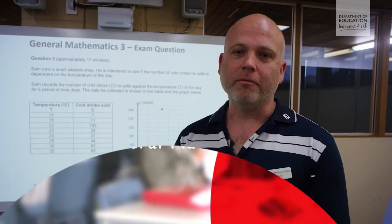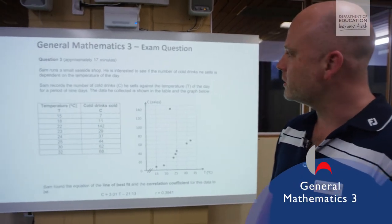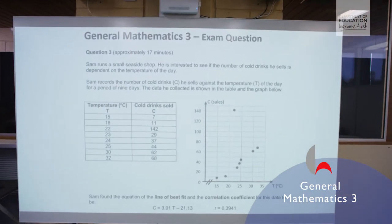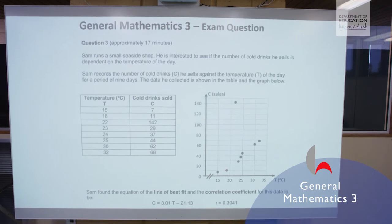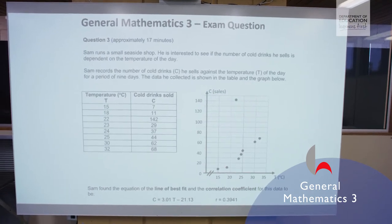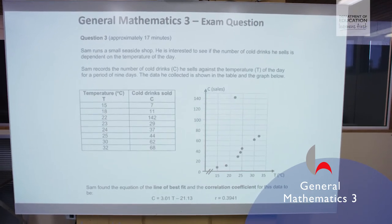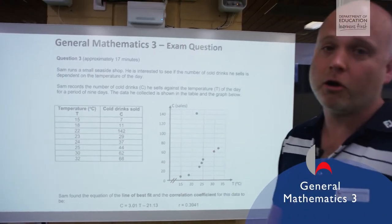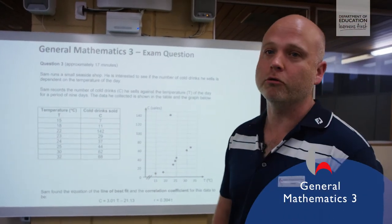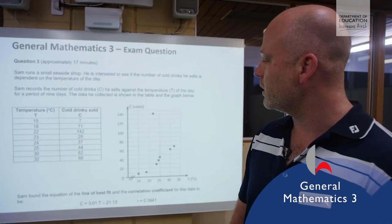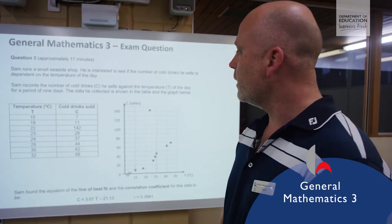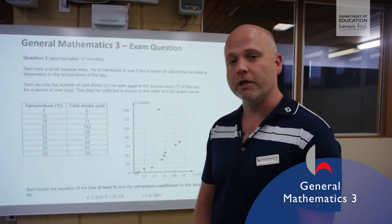So this is a problem from the General Maths 3 course. You can see that we're examining the relationship between the temperature and number of cold drinks sold. So we'd expect that if it's a hotter day we'd be selling more cold drinks and we're modelling this in three different ways. This is a really typical question from General Maths 3.